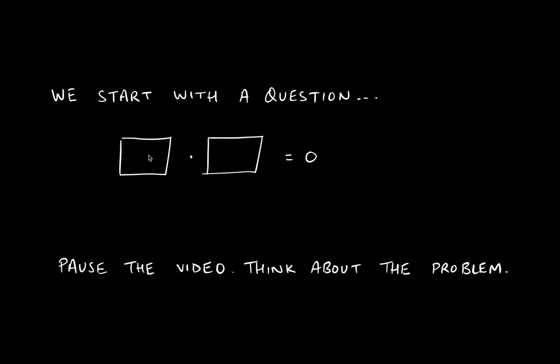The restriction is that the number cannot be zero or any version of it. So you cannot pick five minus five because five minus five is zero, and you cannot pick zero to go into either box. Your task is to see if you can come up with one number to go here, one number to go here, or the same number to go in both, but the product — when you multiply those two boxes — should give you zero.